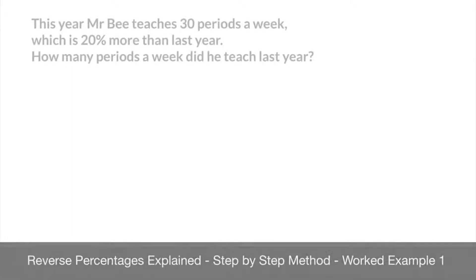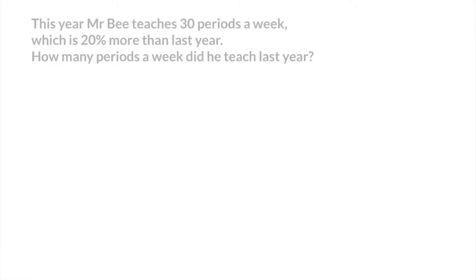We now learn how to solve reverse percentage problems, and for that we're going to work through some examples. The first of which is shown in this tutorial. We're told this year Mr. B teaches 30 periods a week, which is 20% more than last year. We're then asked, how many periods a week did he teach last year?